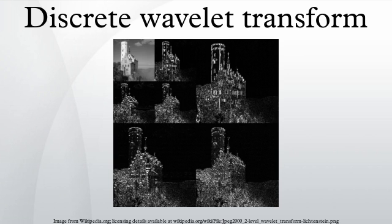The lifting scheme is an optimization where these two computations are interleaved. This decomposition is repeated to further increase the frequency resolution, with the approximation coefficients decomposed with high and low-pass filters and then down-sampled. This is represented as a binary tree with nodes representing a subspace with different time-frequency localization — known as a filter bank. Due to the decomposition process, the input signal must be a multiple of 2^n where n is the number of levels. For example, a signal with 32 samples and frequency range 0 to f with 3 levels of decomposition produces 4 output scales.